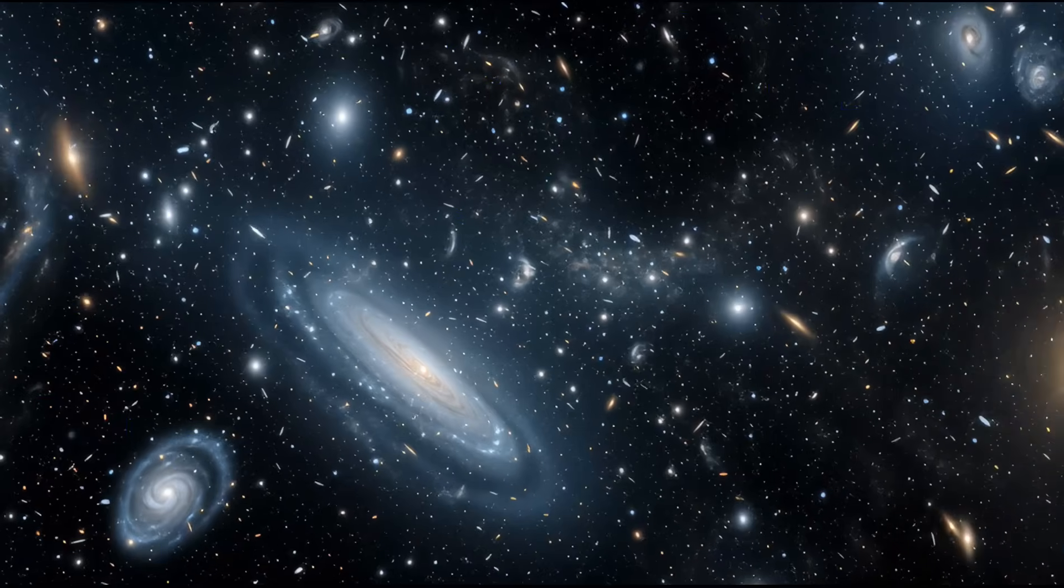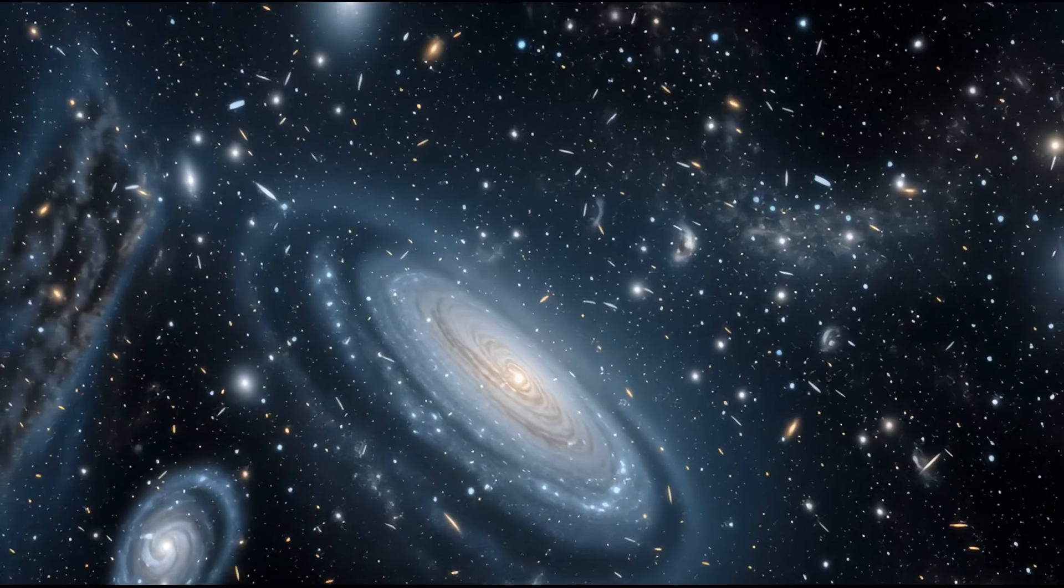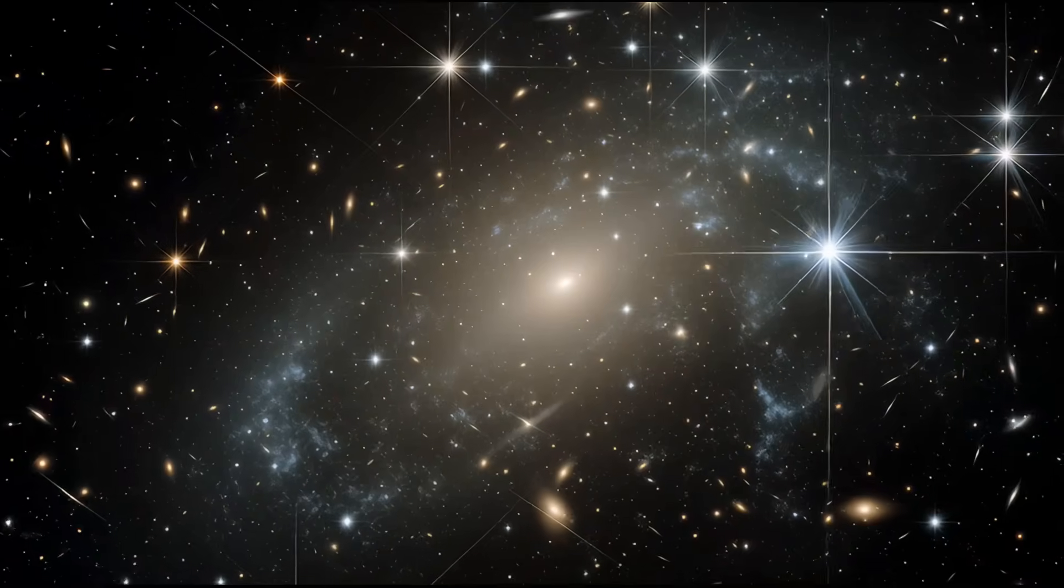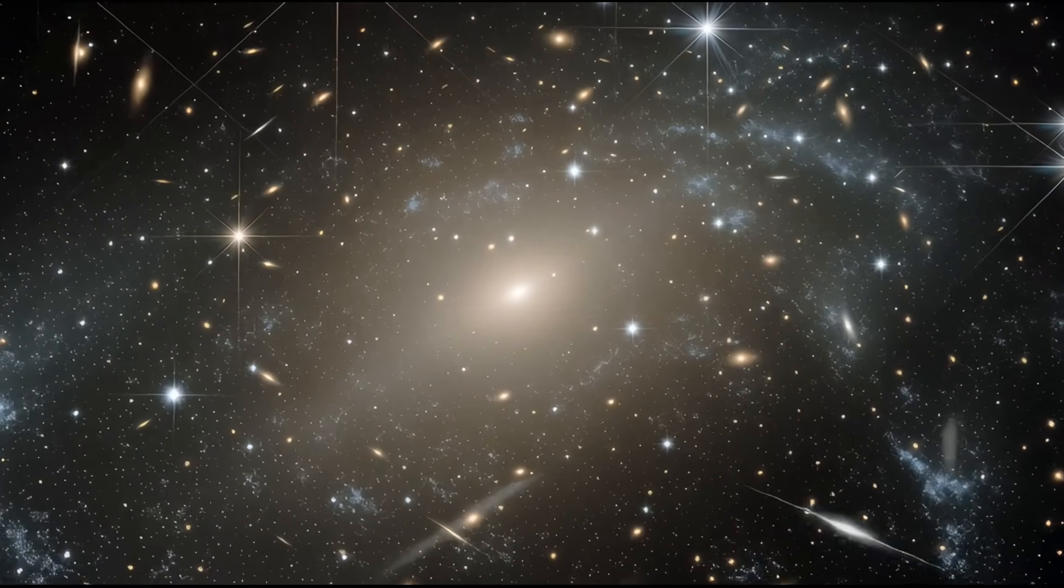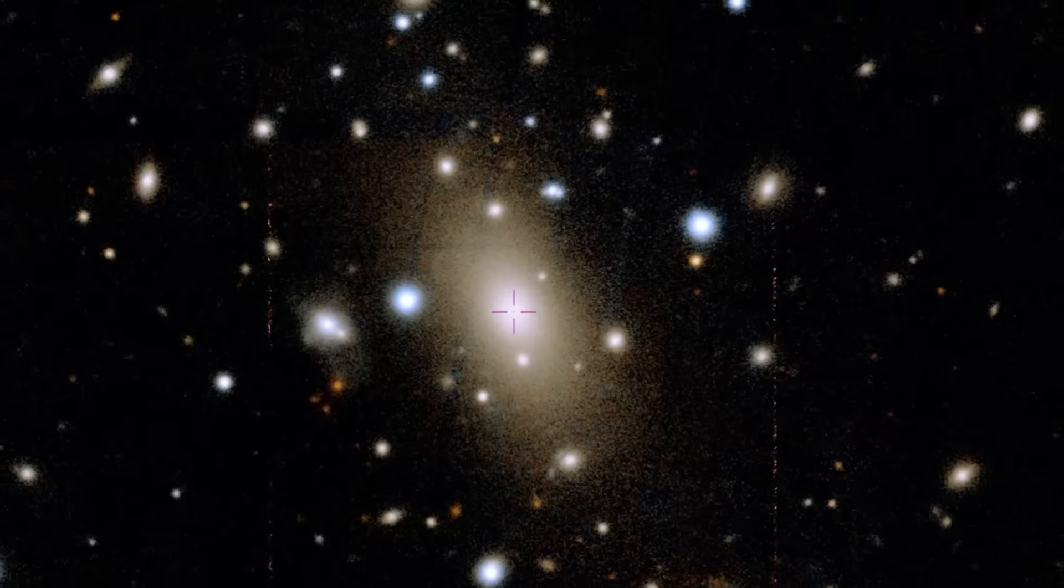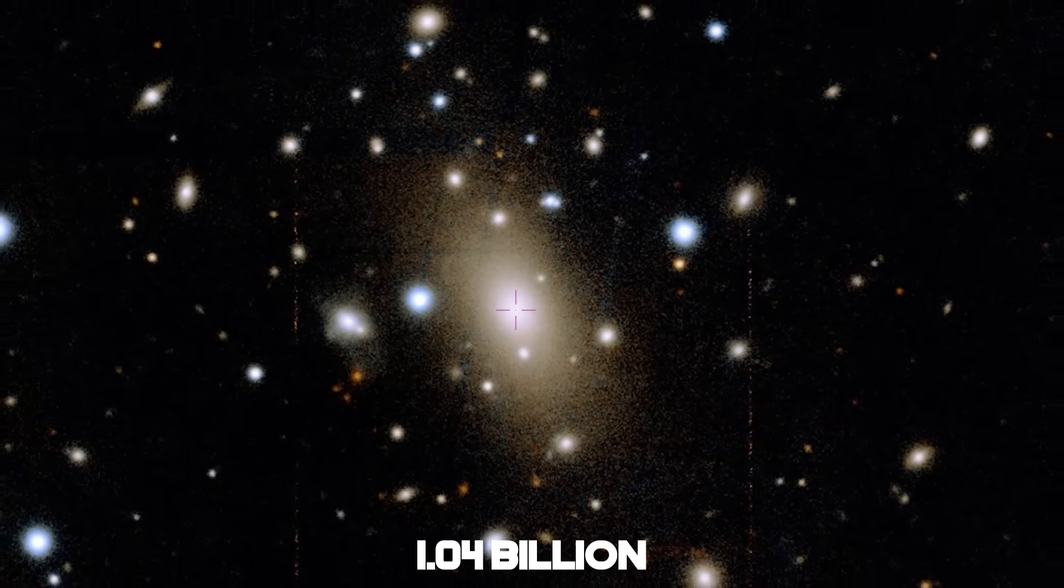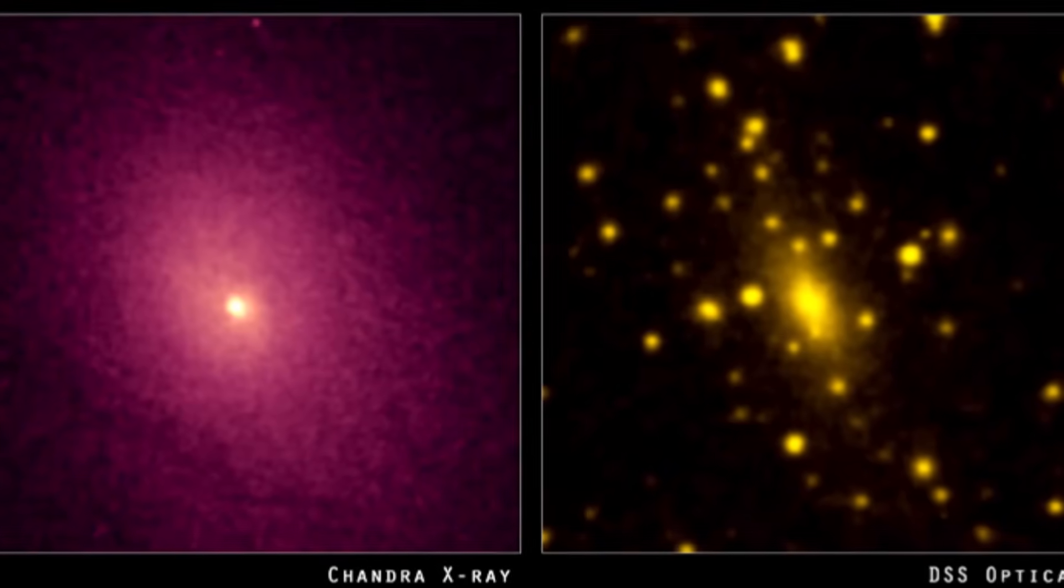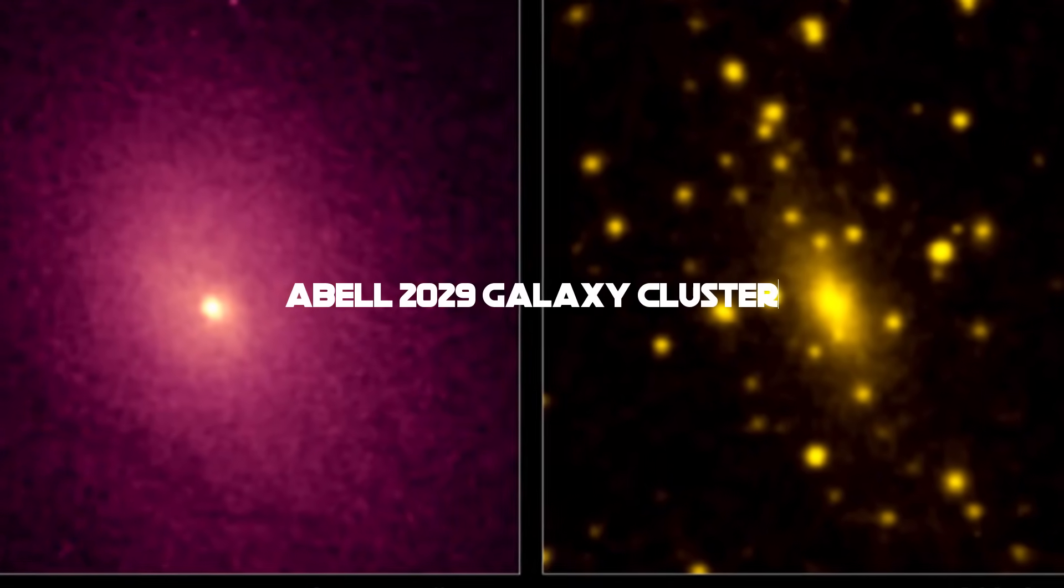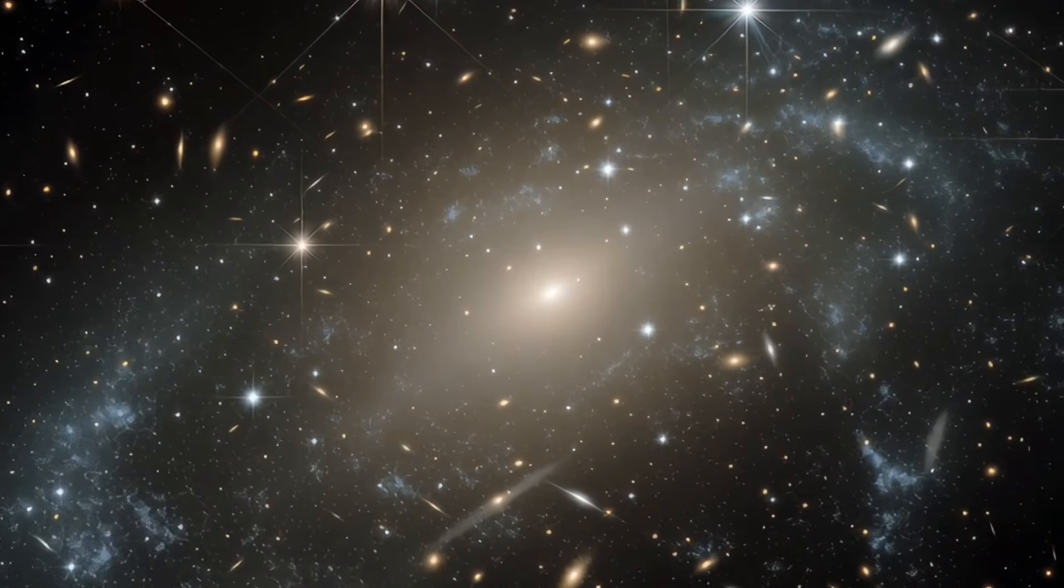But some galaxies took that go big or go home mentality way too seriously. For the longest time, IC-1101 was considered the undisputed heavyweight champion. This supergiant elliptical galaxy sits about 1.04 billion light years away from us in the constellation Virgo, right at the center of the Abell 2029 galaxy cluster. Its stellar halo extends out to about 2 million light years from its core, giving it a total diameter of approximately 4 million light years.